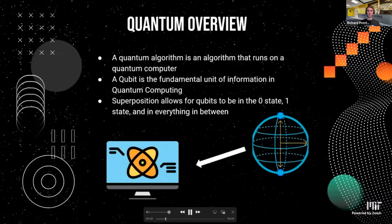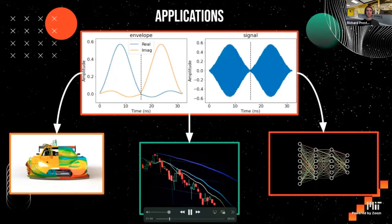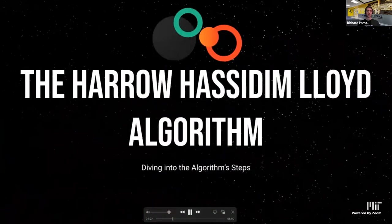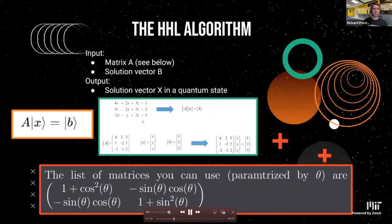Quantum computers speed up tasks that would take forever on a regular computer. Some applications include simulating pulses of different natures, which may let us create fluid flow simulations, advanced financial simulations, and train neural networks more efficiently than classical computers. To do these, we need to solve systems of linear equations really quickly, which we can do with the quantum advantage of the HHL algorithm — the Harrow-Hassidim-Lloyd algorithm. The HHL algorithm takes a matrix A containing the coefficients of the equations we want to solve, solution vector B contains the values on the right-hand side, and the output solution vector X contains the variables we're solving for.